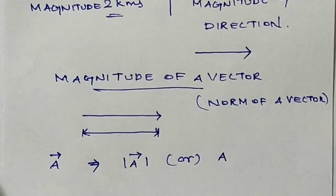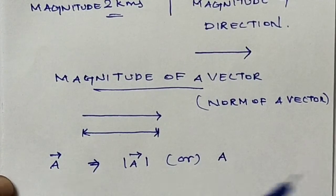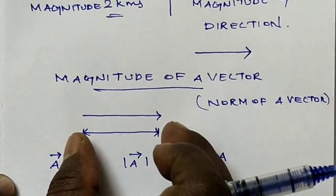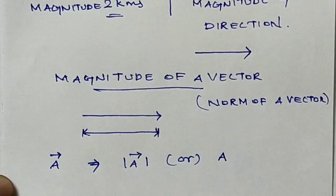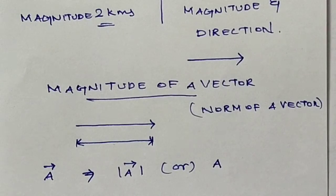To summarize: the magnitude of a vector means the length of the vector, and the length of the vector is called the magnitude of the vector.